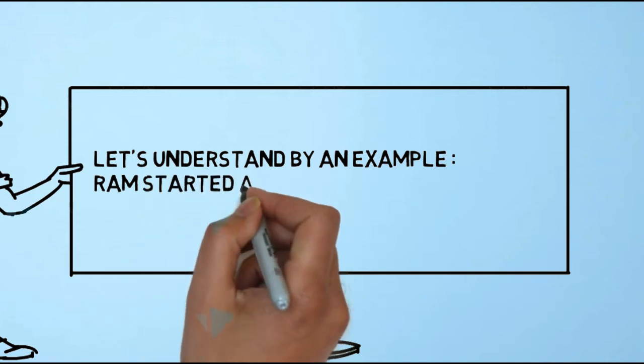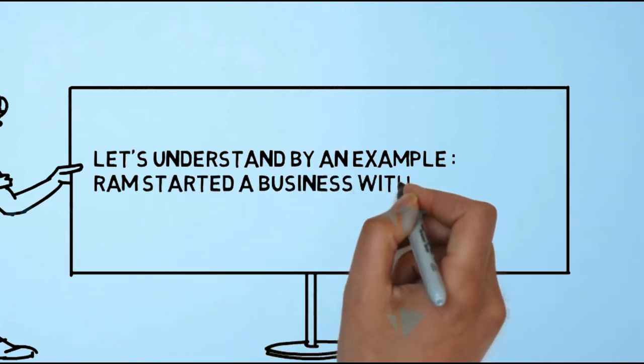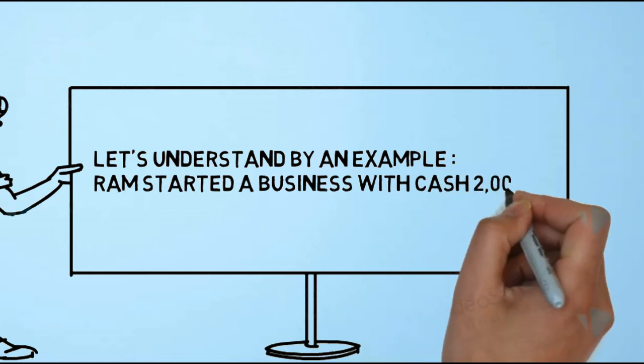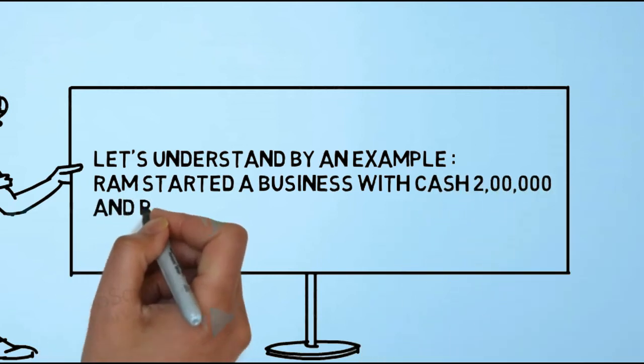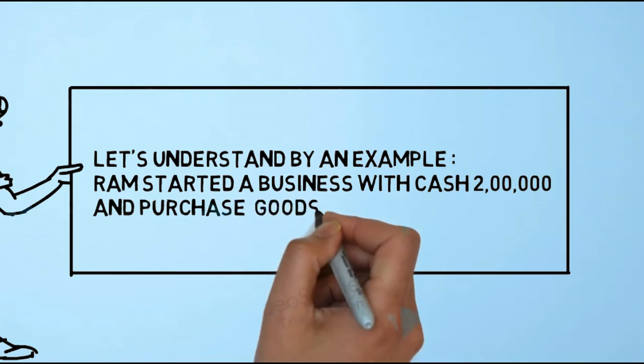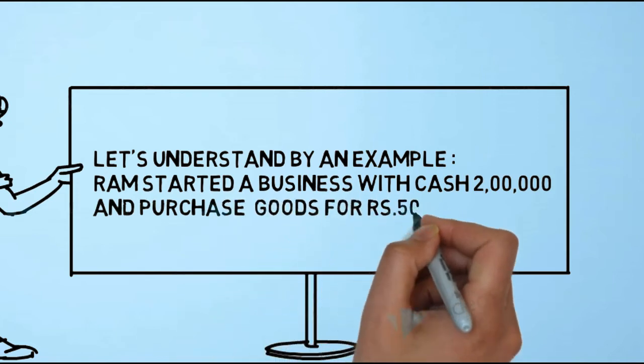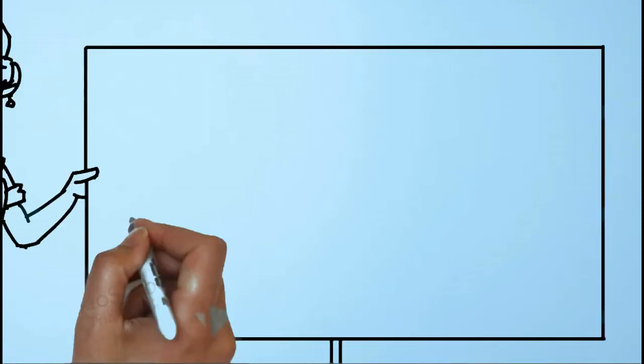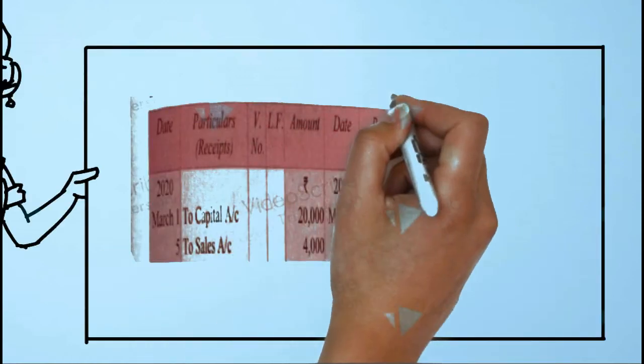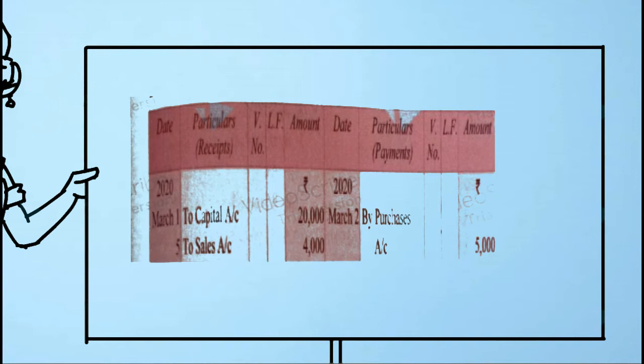Now first we will make the format, and after making the format we will solve the question. Here, Ram contributed two lakh rupees as capital, so we will write 'To Capital Account' under the particulars column of the debit side of the cash book. We will check whether the transaction is done through cash or bank. Here the transaction is done through cash, so we will write 2 lakh under the cash column of the cash book.